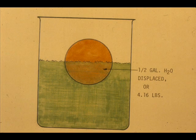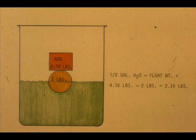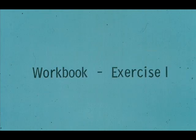Let's consider our 2-pound, 1-gallon volume float. For it to float half submerged in water, it would have to weigh the equivalent of one-half a gallon of water, or 4.16 pounds. We would have to add 2.16 pounds of weight to make it float half submerged. Now work exercise 1 in your workbook.